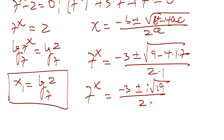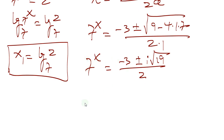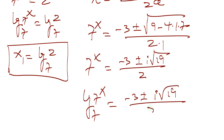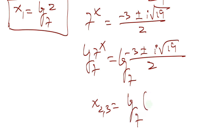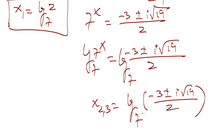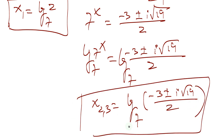Now we apply log base 7 on both sides. We have log base 7 of (negative 3 plus or minus i times square root of 19, divided by 2). So our x₂ and x₃ equal log base 7 of (negative 3 plus or minus i√19) divided by 2. These are the imaginary solutions.